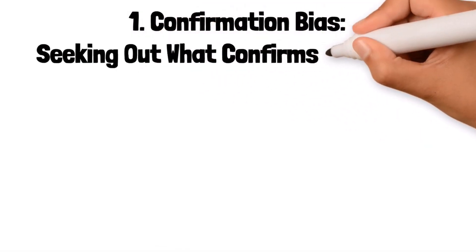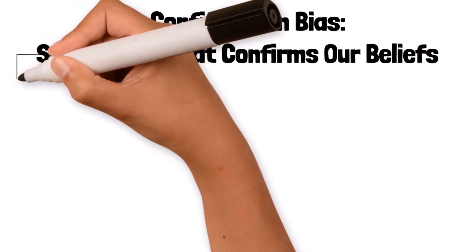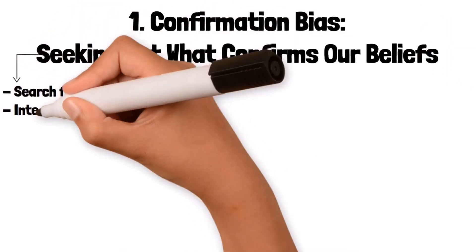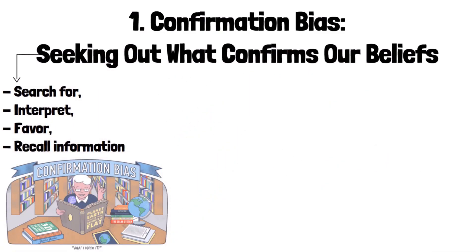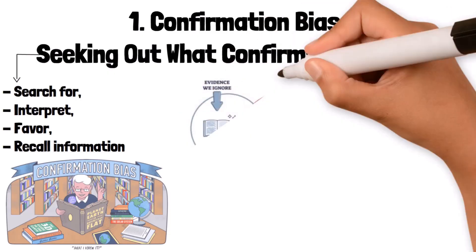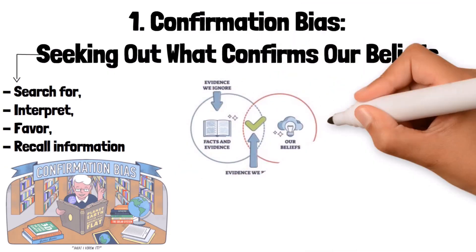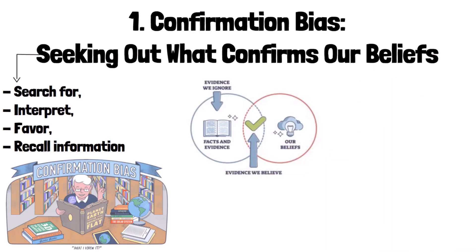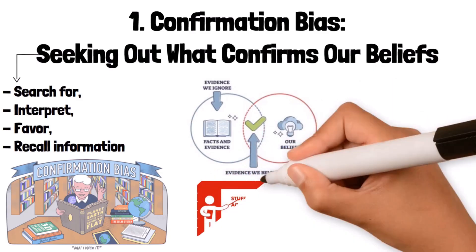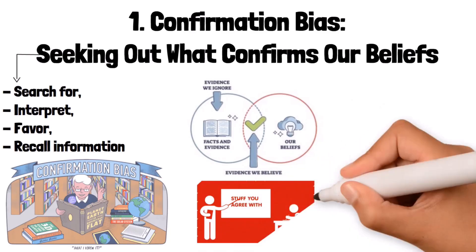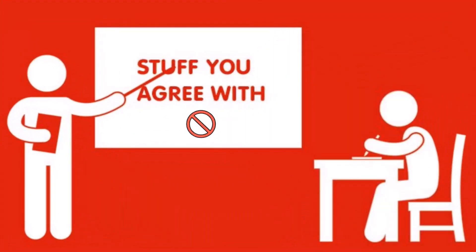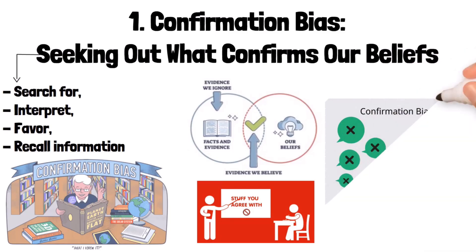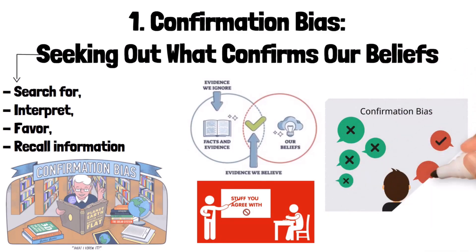1. Confirmation Bias: seeking out what confirms our beliefs. Confirmation bias is the tendency to search for, interpret, favor, and recall information in a way that confirms one's pre-existing beliefs or theories. People tend to give more weight to evidence that supports their existing views and disregard evidence that contradicts them. For example, someone who believes in a conspiracy theory might focus only on supporting information while ignoring evidence that disproves it. This bias reinforces existing beliefs and makes it difficult to consider alternative viewpoints.